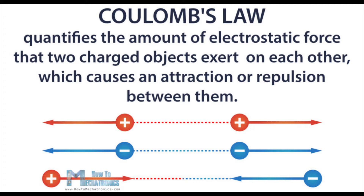The equation for Coulomb's Law is F = k·q1·q2 / r², where r is the distance between the two charges. This equation provides an accurate description of the force between two objects whenever they act as point charges. A charged conducting sphere interacts with other charged objects as though all of its charge were located at its center, while the charge is uniformly spread across the surface of the sphere.